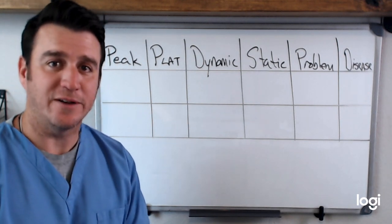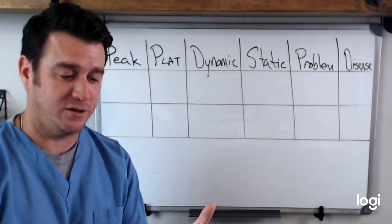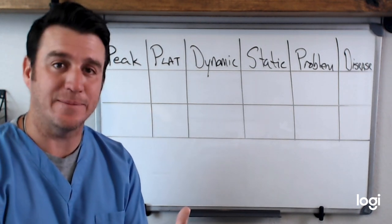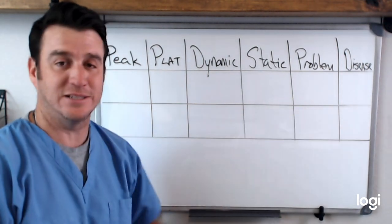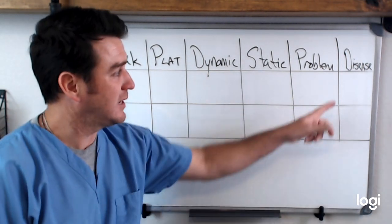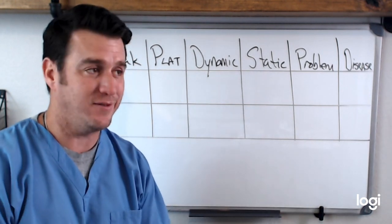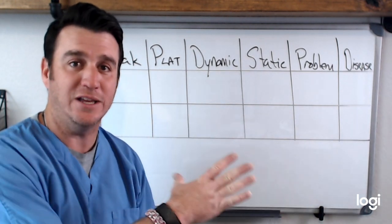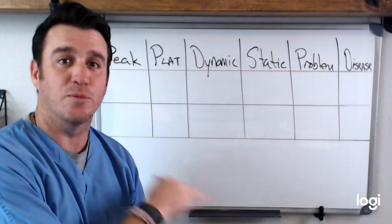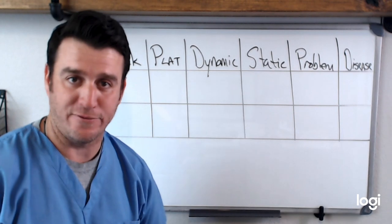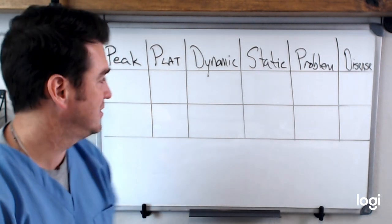Hey future respiratory therapists, I've got a video here for you today where I want to tie together things like peak pressure, plateau pressure, dynamic compliance, and static compliance. I want to talk about the problems that will cause these different scenarios, then break it down and add a disease process onto it. And at the very end, I want to show you how each of these will present differently on your pressure scalar graph. So let's jump into it and talk about peak, plat, dynamic, static — all those things.